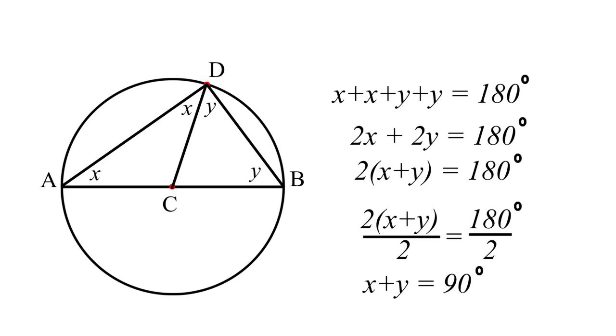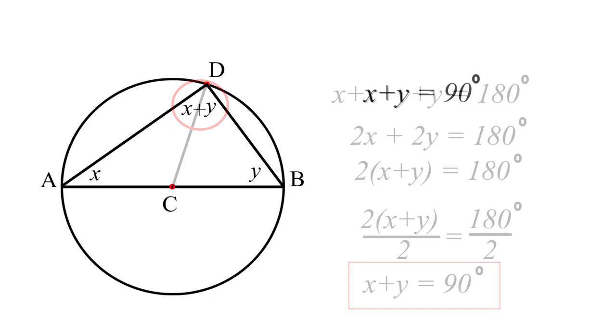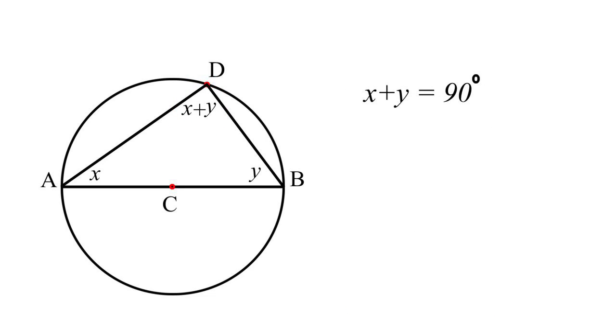Looking back at our drawing, we can see that angle ADB equals X plus Y, which equals 90 degrees. This proves Thales' theorem. Angle ADB equals 90 degrees.